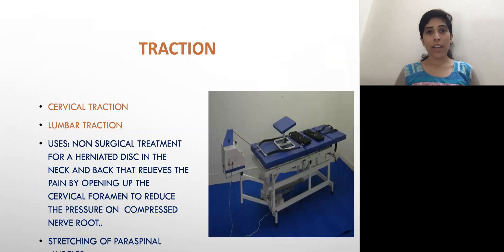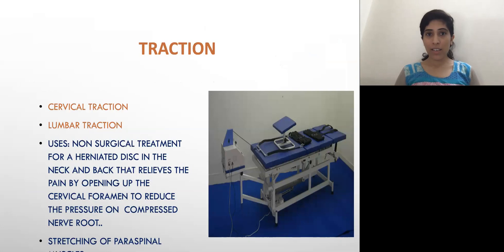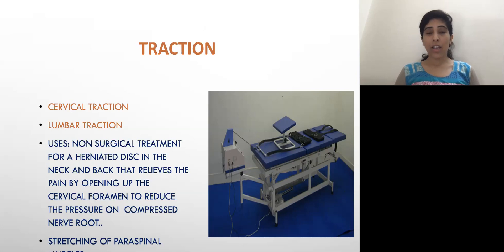It is called traction. Mainly two types of tractions are available: cervical traction and lumbar traction. It is used as a non-surgical treatment for a herniated disc. It reduces the compression of the nerve root. As a result, it helps to reduce tingling and numbness sensations in the extremities, as well as reduces paraspinal muscle spasm.